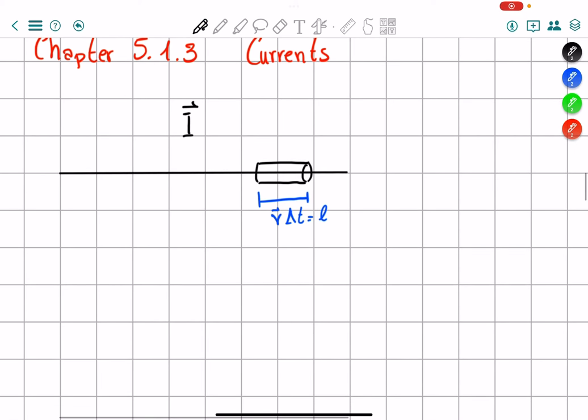And inside this length, there's going to be a certain amount of charge, which is going to be equal to the length times the density, which is, in this case, a linear density, since we have a linear wire. And we can write this as V delta T times the linear density. And this is the amount of charge that is in this cone of length L.